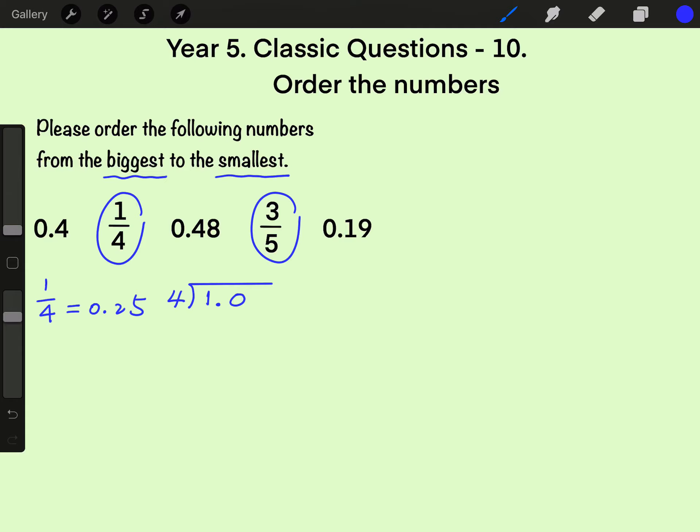Now, 1 on the one digit position equals to 10 on the tenth position. Then for the quotient, because 1 is smaller than 4, we write 0 on the one digit position. And please do not forget the decimal point of the quotient. On the tenth position, 2 times 4 is 8. 10 minus 8 is 2. We need another 0 on the hundredth position.